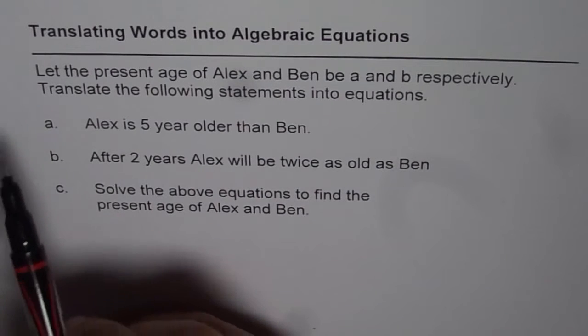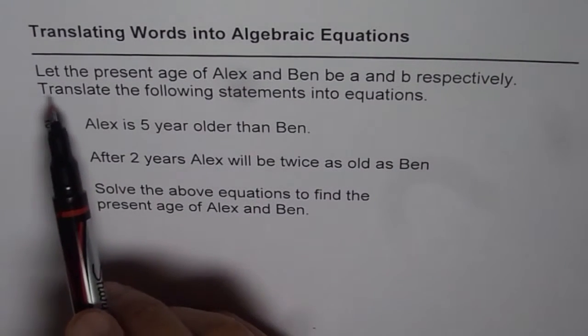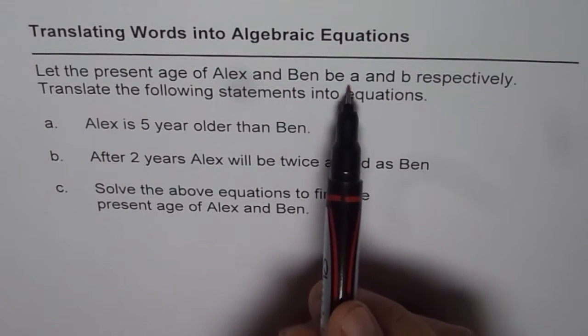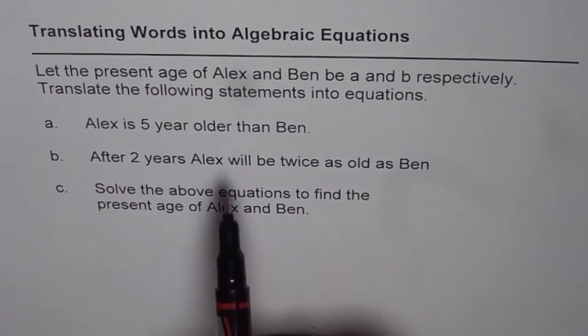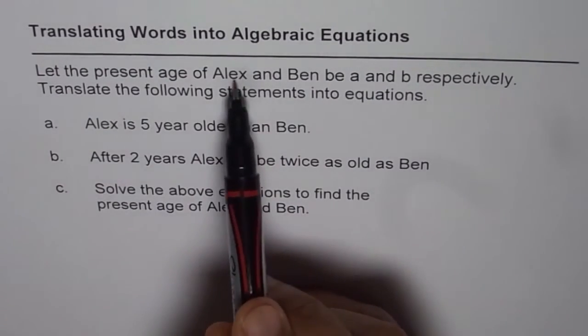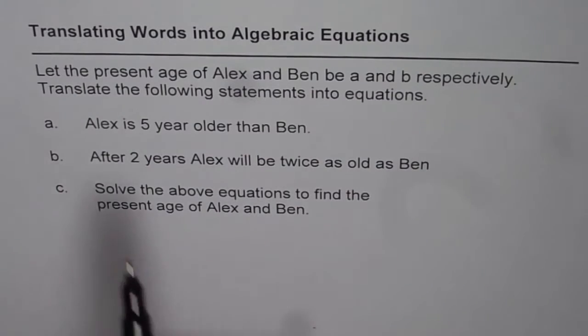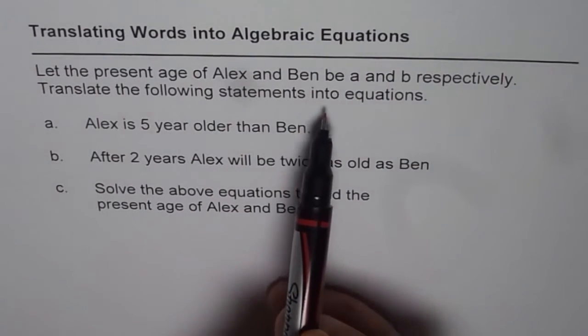Now to start with, we have a let statement. It says, let the present age of Alex and Ben be A and B respectively. That means A years old is Alex and Ben is B years old. Translate the following statements into equations.